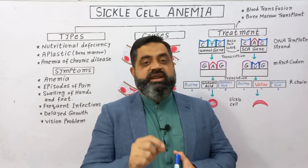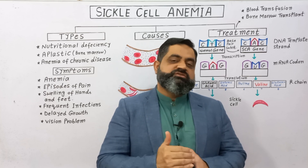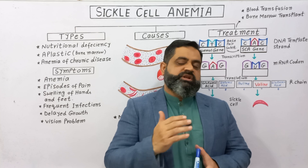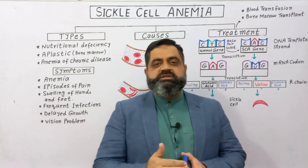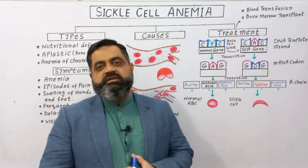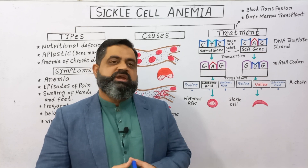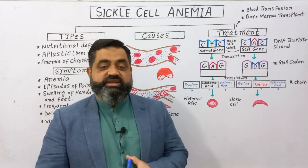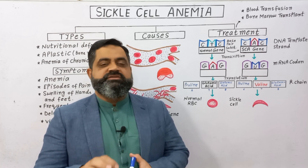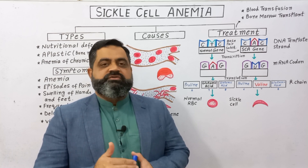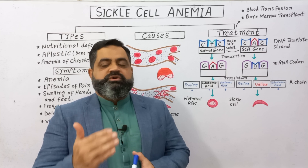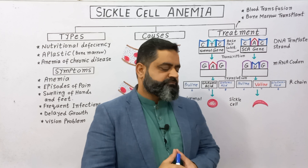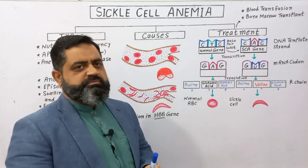Mutations occur at the DNA and gene level. When these faulty genes are passed from one generation to another, they express themselves in the next progeny and can lead to serious illnesses known as genetic defects. Sickle cell anemia is essentially a genetic, hereditary disease transferred from parents to their offspring.